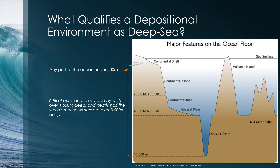While this area is full of sediments and appears smooth, this is really not the case once you look under all the sediment. Since these areas are formed as a result of seafloor spreading from the nearby ridge, the crust itself is actually quite an uneven area.